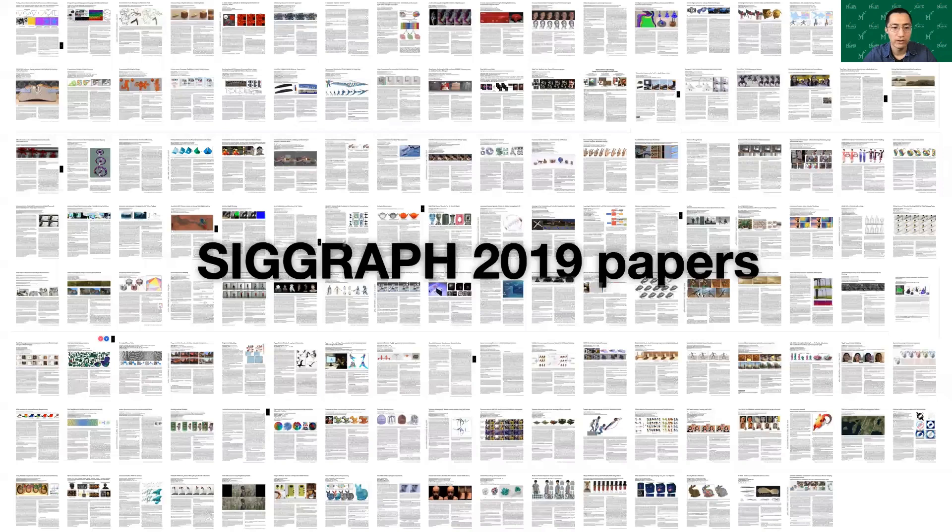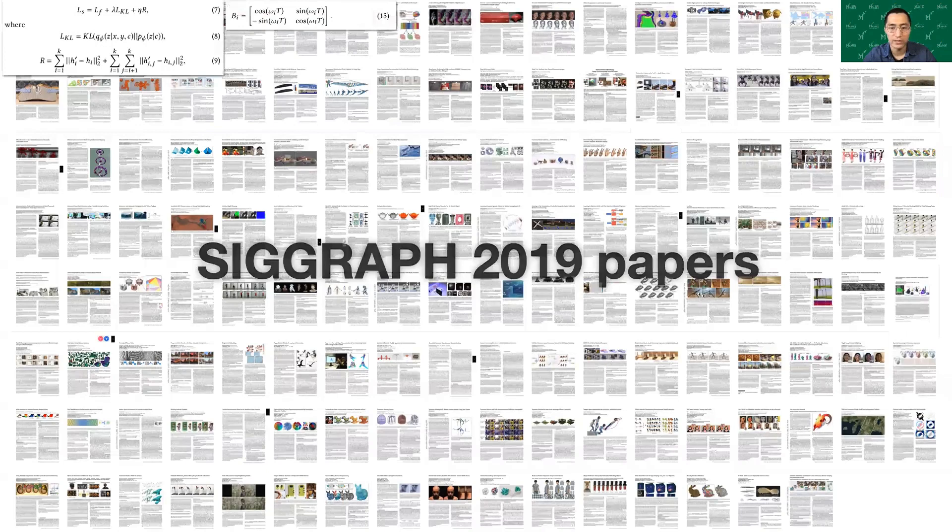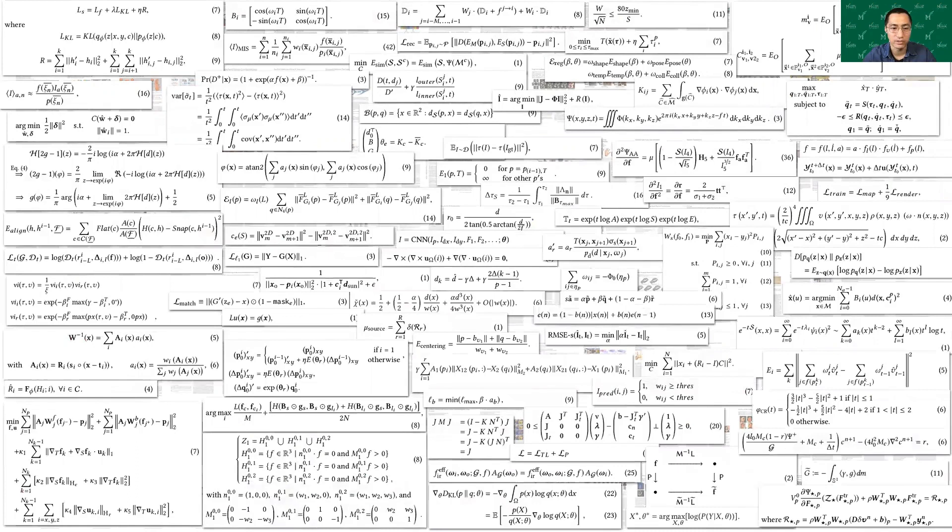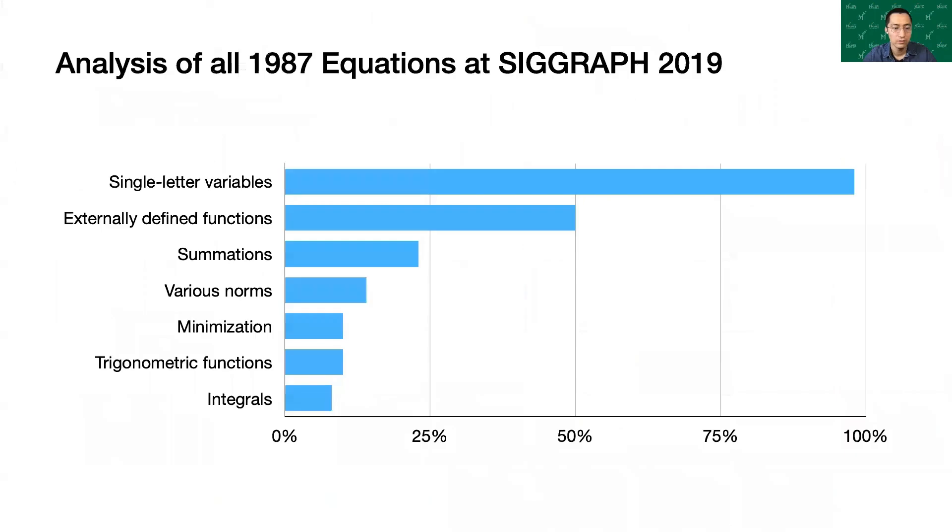To motivate our decisions and inform our choice of features beyond core operations, we analyzed all numbered equations and some unnumbered equations from all technical papers published at SIGGRAPH 2019. We take an empirical approach to language design and categorized our 1,987 equations.